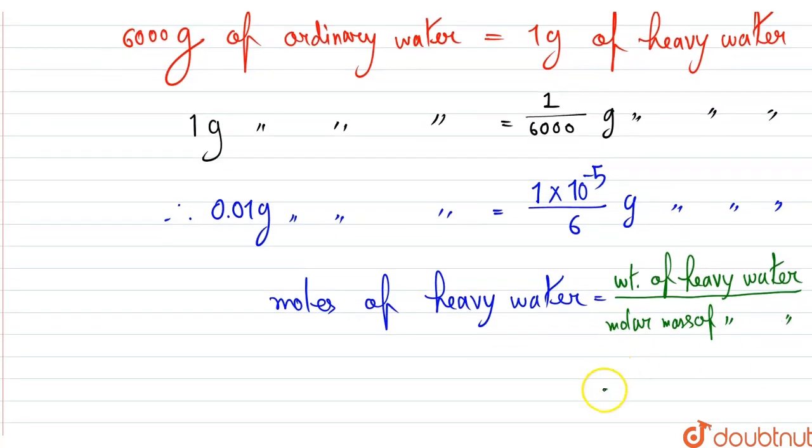then we can get the number of moles of heavy water. Weight of heavy water 10 to the power minus 5 divided by 6 into 20, so it will be